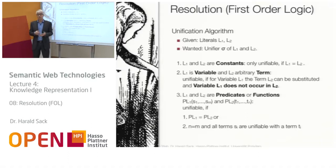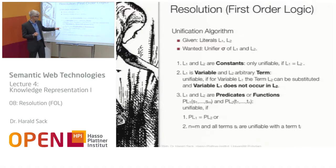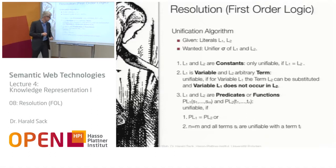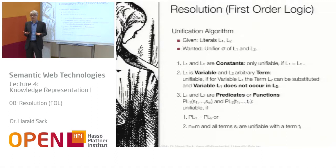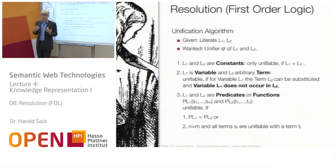The third case: if l₁ and l₂ are predicates or functions, with arguments s₁ to sₘ and t₁ to tₙ respectively, they are only unifiable if they are the same predicate symbol, their arities are equal (m equals n), and all corresponding terms sᵢ and tᵢ are unifiable. Only then are both literals unifiable.